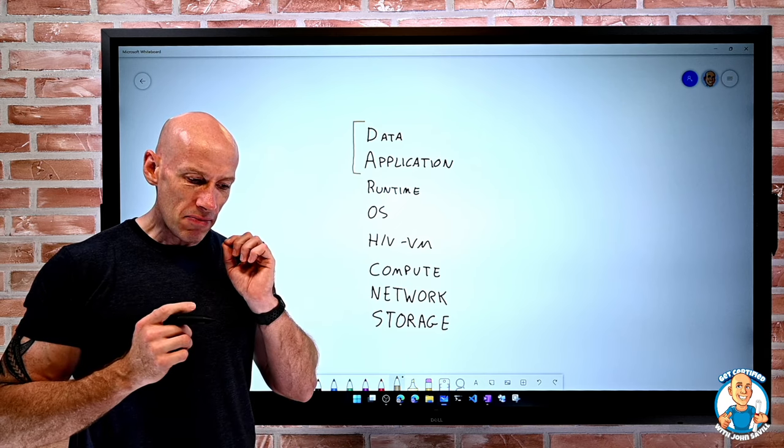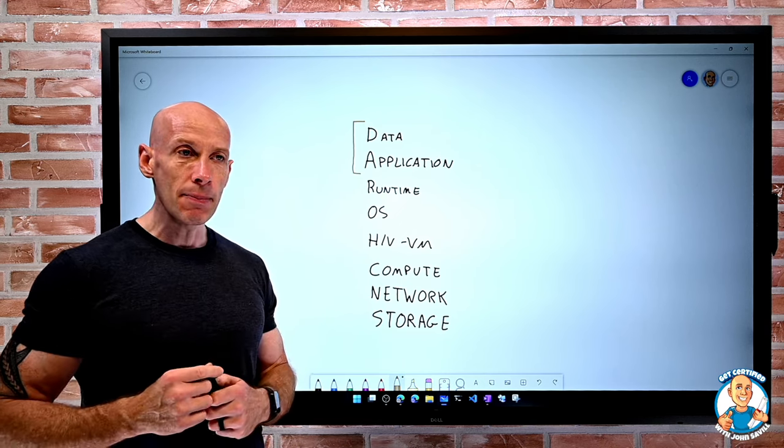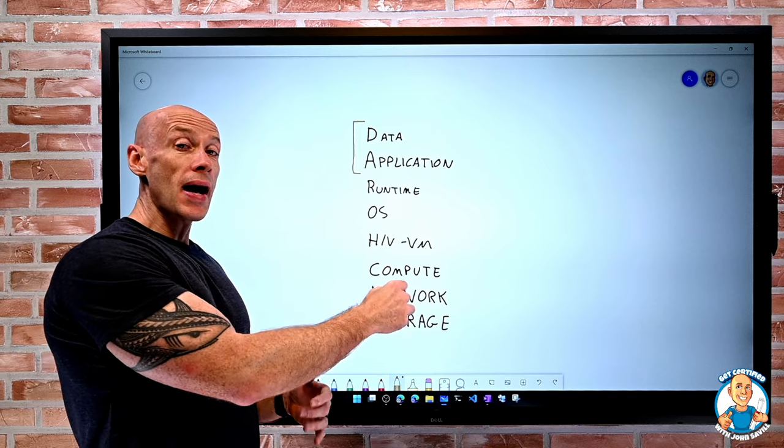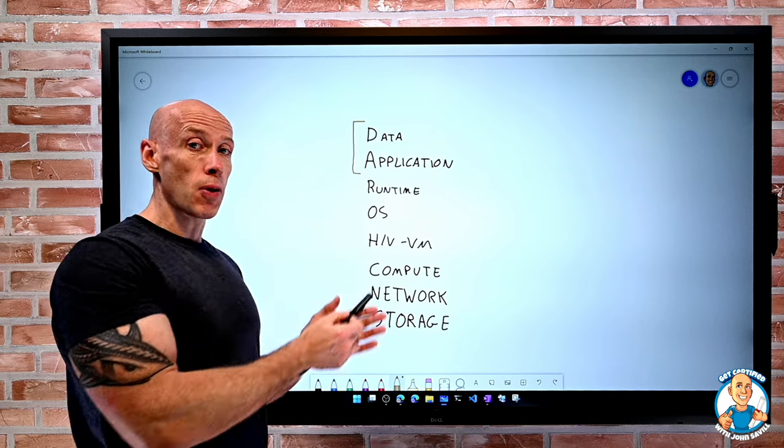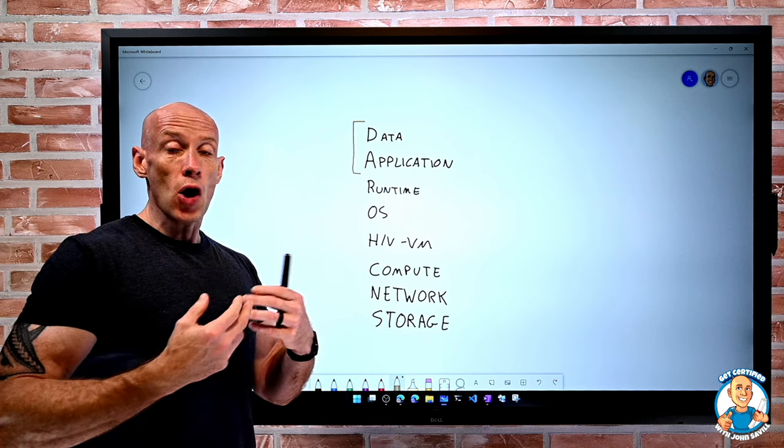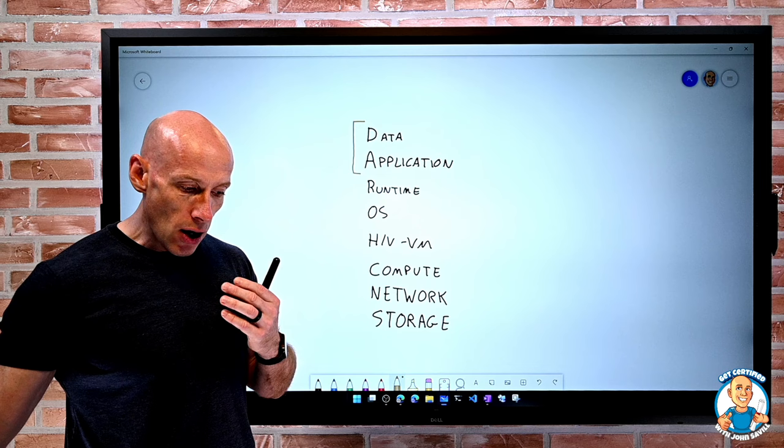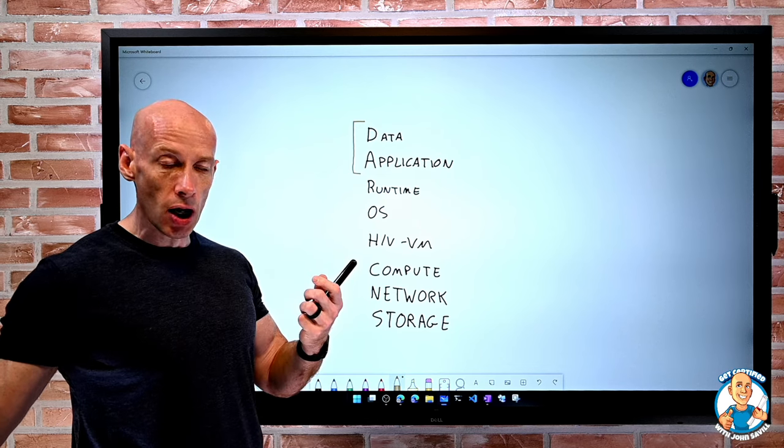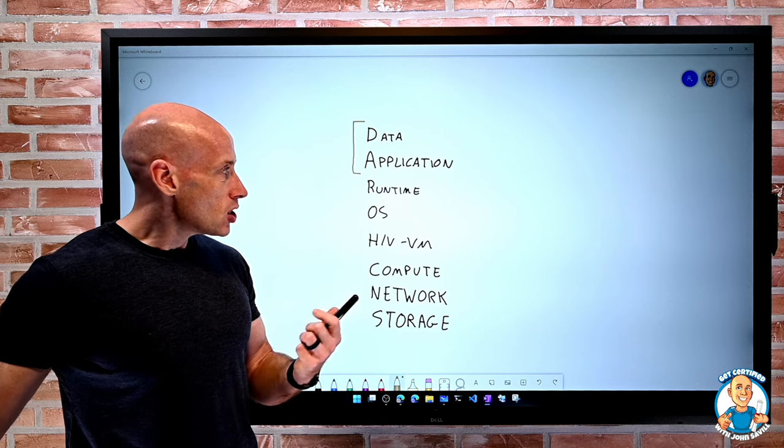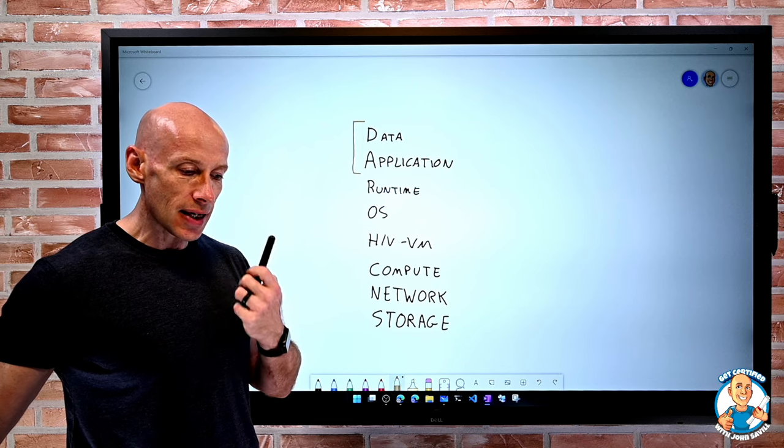As an organization, where is that differentiation between my company and another company? Where's the innovation that's going to set me apart? Well, it's the application and my data that we really care about the most. Most of this other stuff is just things that have to be there for me to be able to operate, but that's not really how I excel as a company.